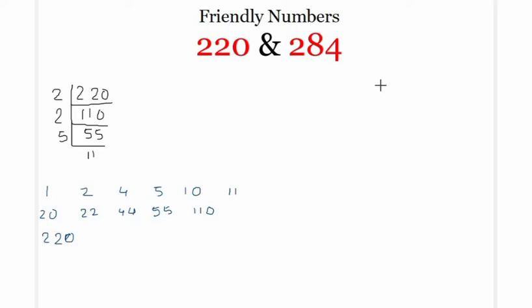Next, 284. This number is divisible by 2, so 142. It is again divisible by 2, giving 71. Therefore the divisors of 284 are 1, 2, 4, 71, 142, and 284.